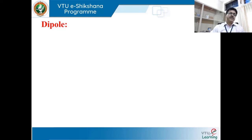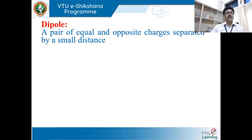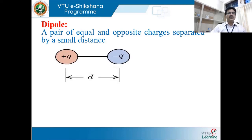To understand the properties of the dielectric, let us start with the fundamental concept of a dipole. The definition of a dipole is: a pair of equal and opposite charges separated by a small distance. There are two charges — one is +q and one is −q — equal in magnitude but different in polarity, separated by a small distance.